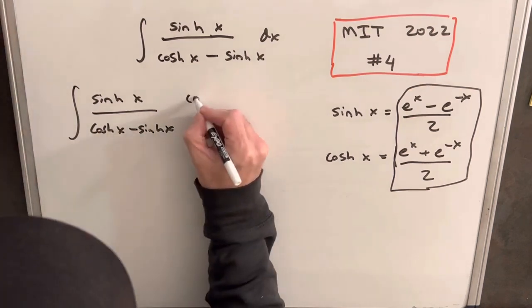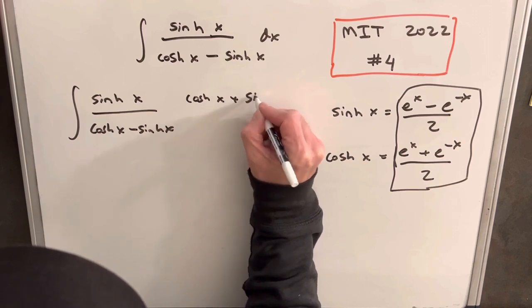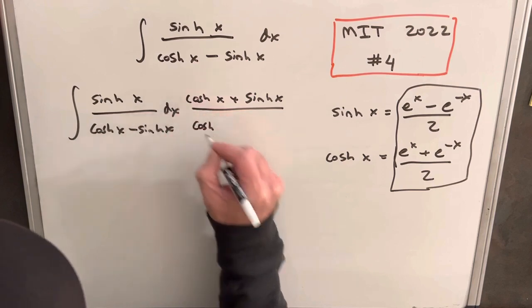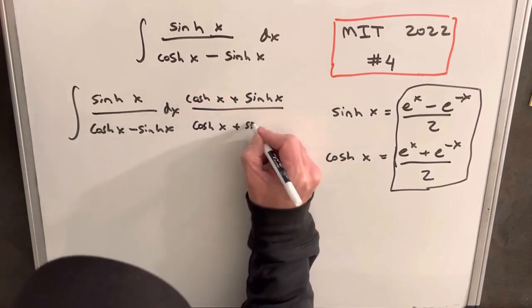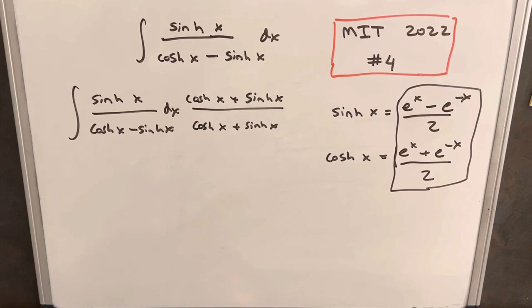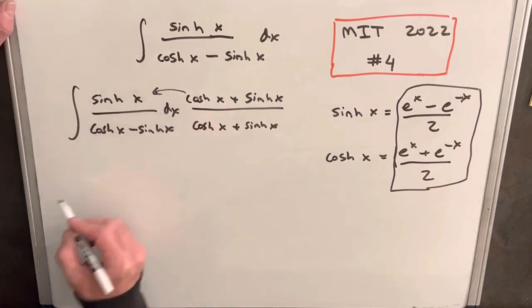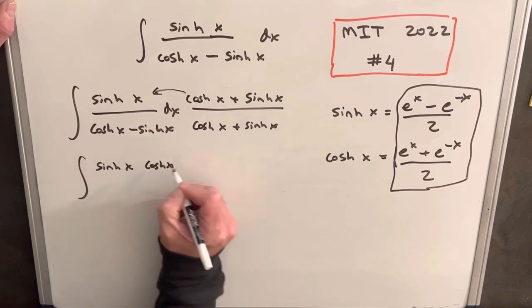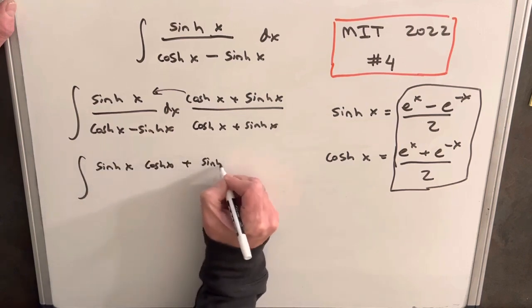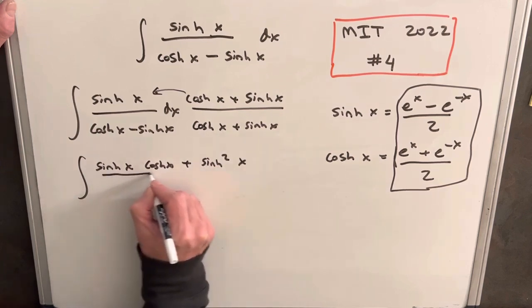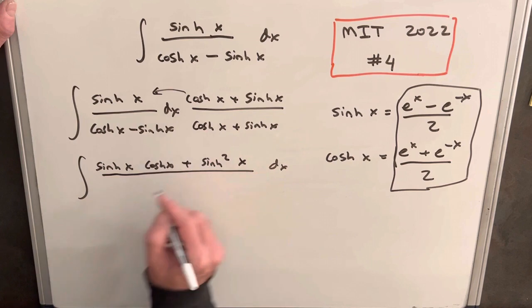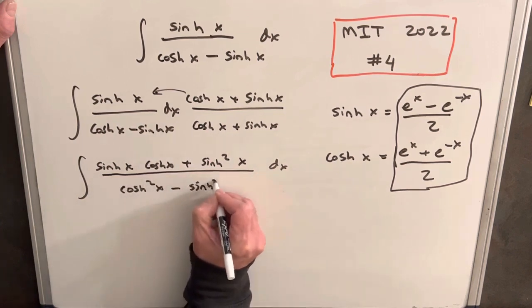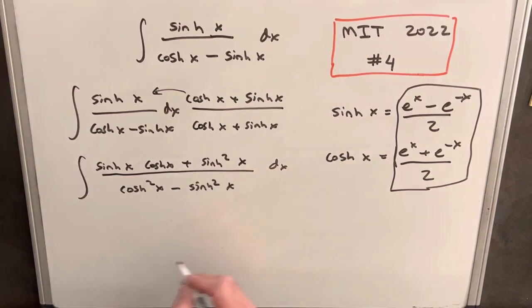And what I want to do is multiply top and bottom by the conjugate. Okay, we'll have our dx over there, cosh x plus sinh x, numerator and denominator. Now let's see what happens when we multiply that through. So we're going to have sinh x cosh x plus sinh squared x. And then in our denominator, we're going to have cosh squared x minus sinh squared x.